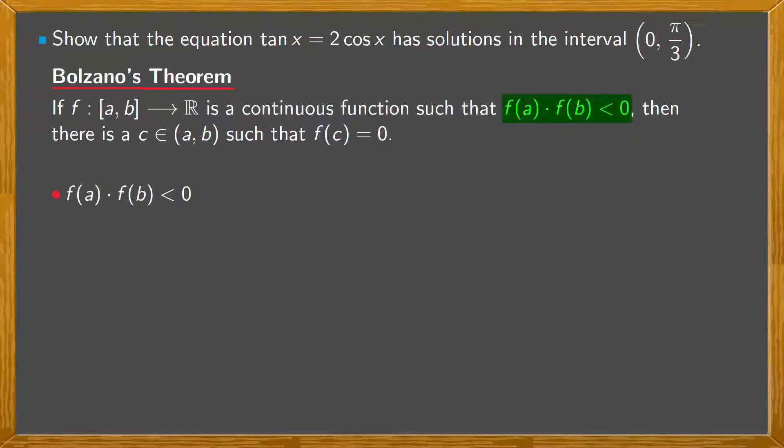What does it mean if f(a) times f(b) is less than 0? f(a) and f(b) must have different signs.